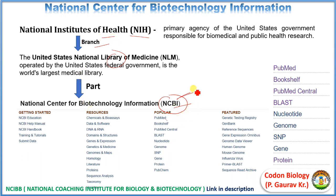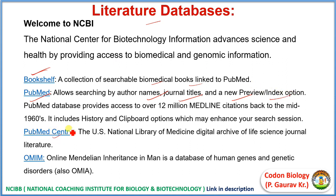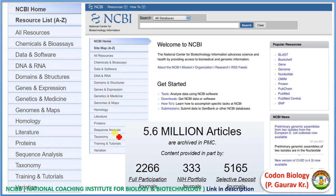NCBI is a housekeeper of various databases. For example, NCBI has a literature database like Bookshelf, a collection of searchable biomedical books linked to PubMed. PubMed allows searching by author name, journal title, and a preview or index option. Another is PubMed Central, a collection of life science journal literature. And another is OMIM — Online Mendelian Inheritance in Man — a database of human genes and genetic disorders, also called OMIA. If you go to the NCBI site, you will get huge resources like 5.6 million articles, increasing day by day.